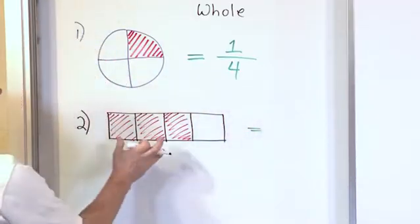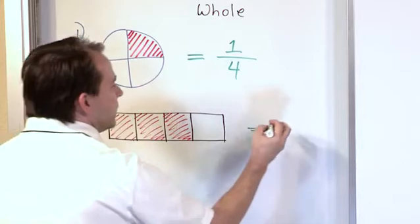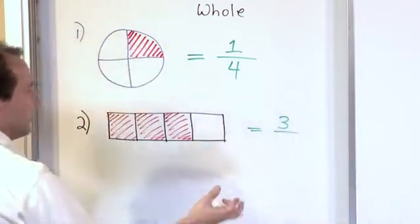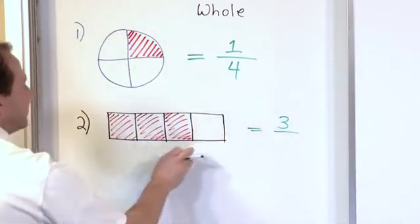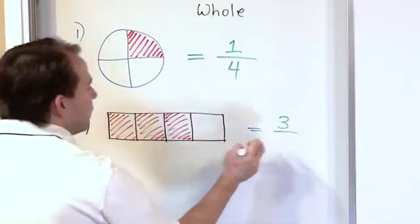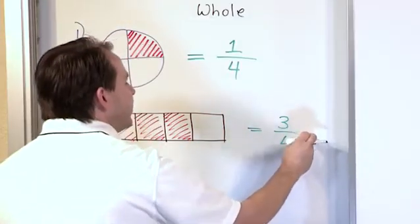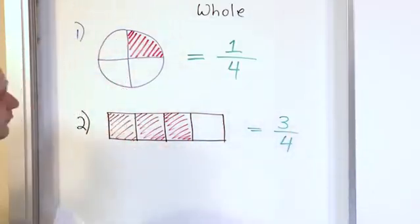Well, how many parts am I giving him? I have three parts here. And how many parts, whole parts, do I have in the entire candy bar? One, two, three, four. So you see, I give him three out of four pieces. That's what a fraction is.